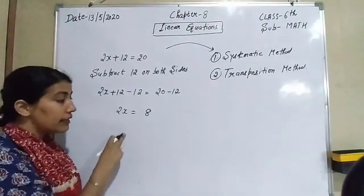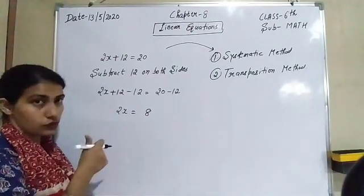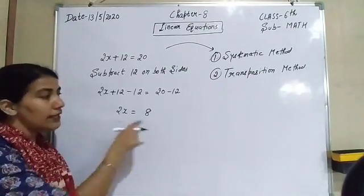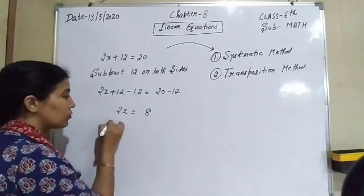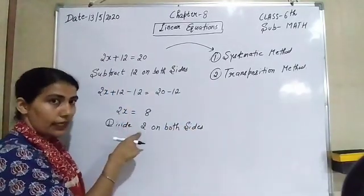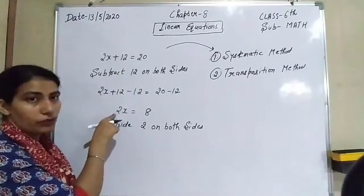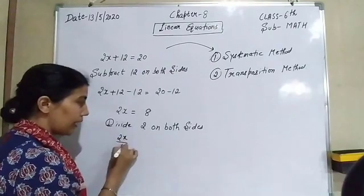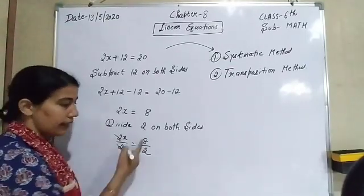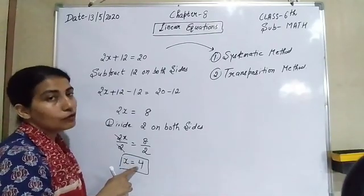We need only the value of x on the left-hand side, but the coefficient of x is 2, so we have to remove this 2 as well. Since 2 is multiplied with x, we divide by 2 on both sides. It becomes 2x/2 = 8/2. The 2s cancel, leaving only x, and 8 divided by 2 is 4. So by using the systematic method, the value of x is 4.